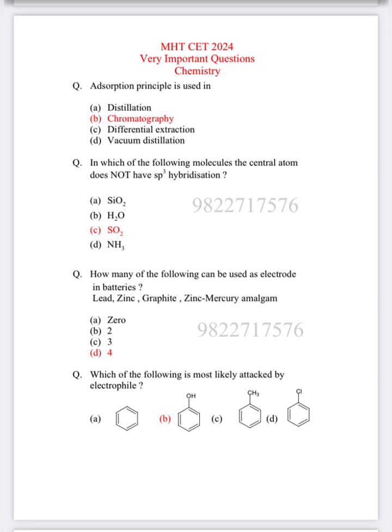Which of the following is most likely attacked by electrophile? Positively charged species can easily attack. Answer is B, the OH group.